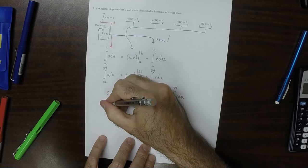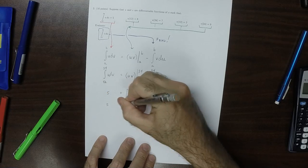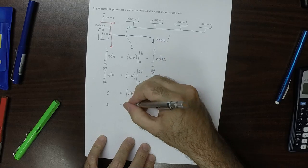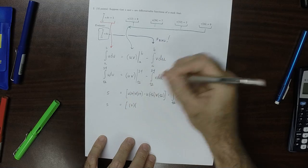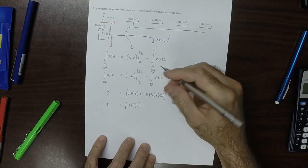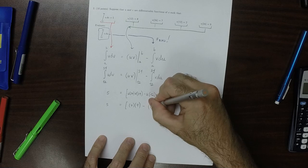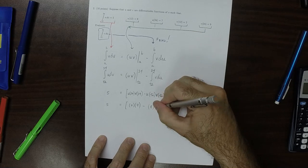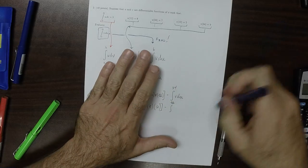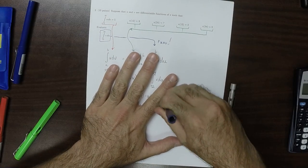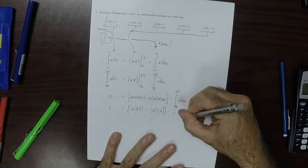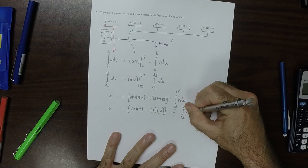Well, now all those bits can be plugged in. So u at 34, v at 34, so 7 times 9, minus u at 12 which is 8, v at 12 which is 2. So minus the integral from 12 to 34 of v du.